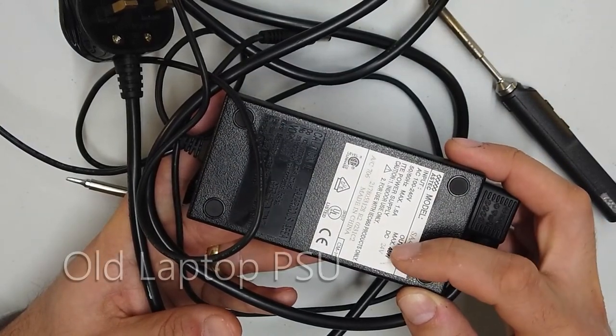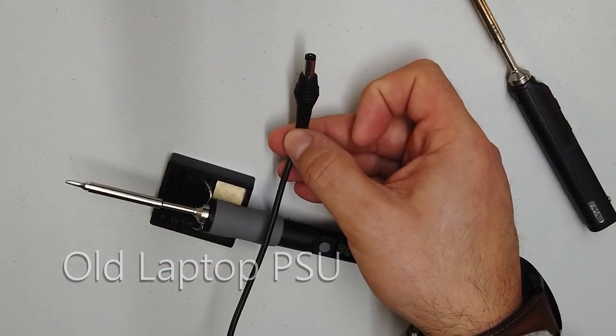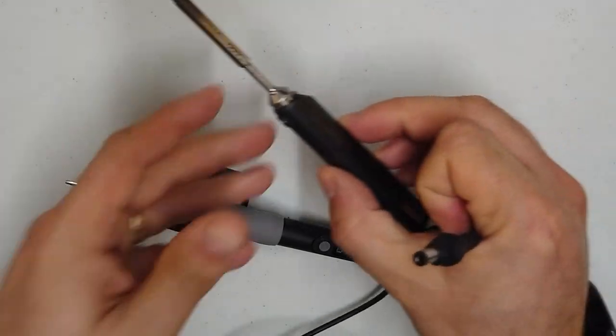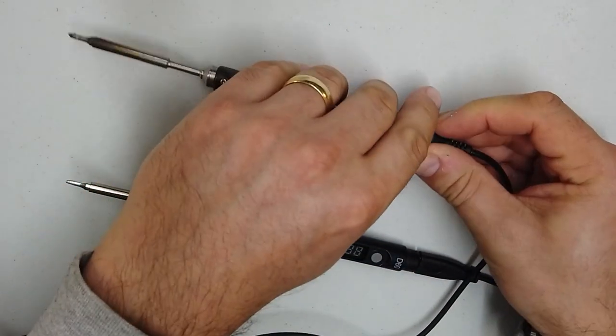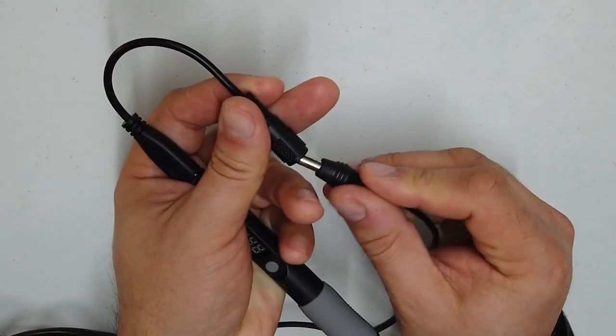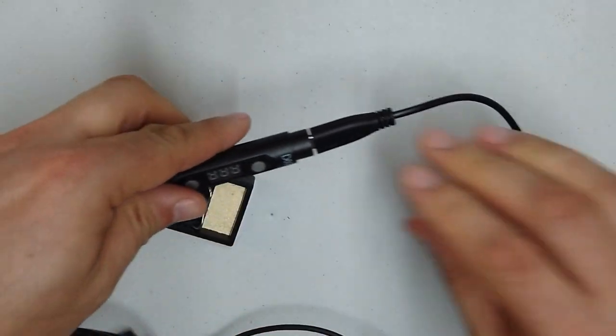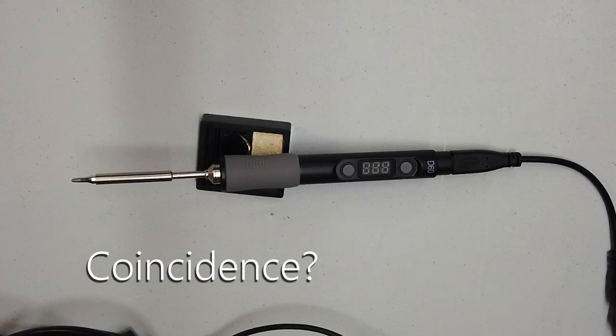So it's about a 2 amp, 24 volt power supply. And it has on it a little barrel jack. That barrel jack fits directly into the TS-100 and fits directly into the adapter cable that came with the Secure soldering iron.